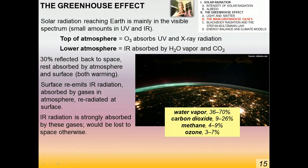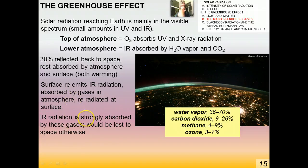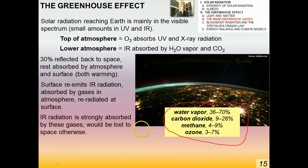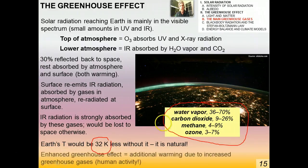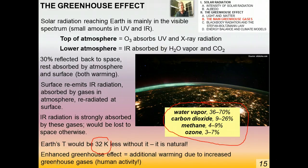It's like one big mechanism where everything is influencing everything else — a more fragile system than you might think. The infrared radiation is strongly absorbed by these gases because of their resonant frequencies; otherwise it would be lost to space. If we didn't have any of these gases, the Earth's temperature would be on average 32 Kelvin less — it would be freezing. So the greenhouse effect is natural and we need these gases. We just don't need to be artificially increasing the amounts of them.